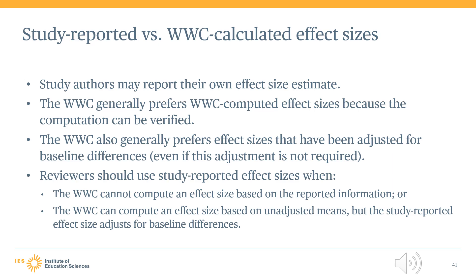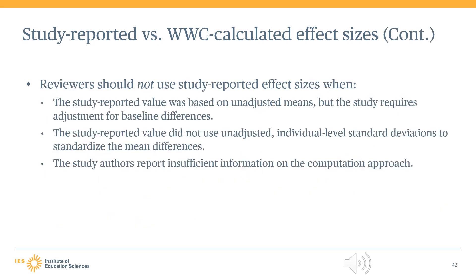There are two common scenarios in which the WWC may elect to use the study-reported effect size. First, when the WWC cannot compute an effect size based on the reported information. Or second, when the WWC can compute an effect size based on unadjusted means, but the study-reported effect size adjusts for baseline differences. However, the WWC will not use study-reported effect sizes when the study-reported effect size was based on unadjusted means but the study requires adjustment for baseline differences.